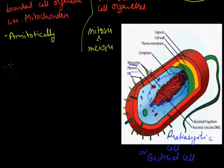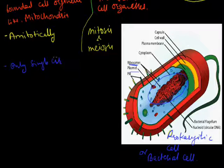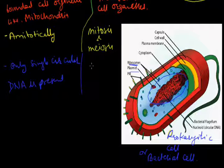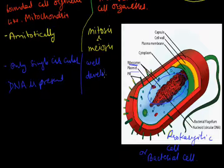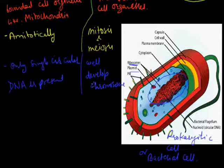In the case of the prokaryotic cell, there are no well-developed chromosomes — only a single circular DNA is present. In the case of eukaryotic cells, they have well-developed chromosomes, which are responsible for the transmission of hereditary material from one generation to another.